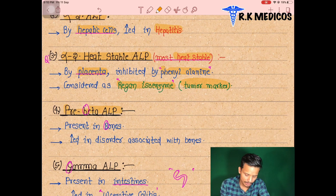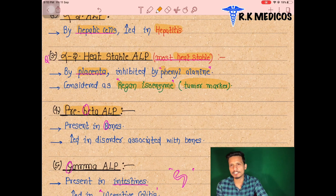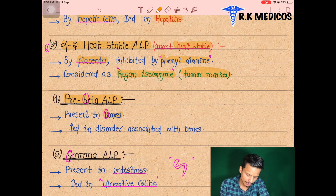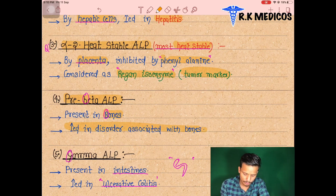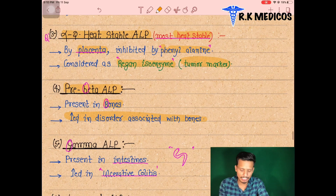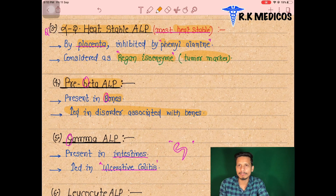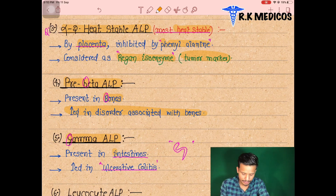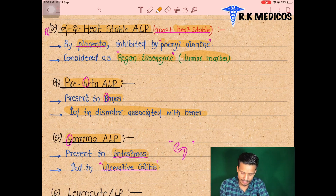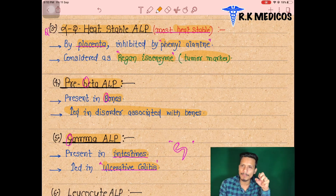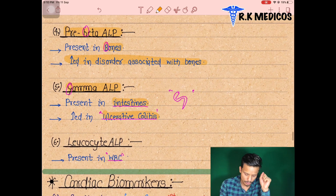Pre-beta ALP indicates bone disorders — it is elevated in conditions associated with bone disease. Gamma ALP is elevated in intestinal diseases such as ulcerative colitis, where ulceration occurs in the large intestine.